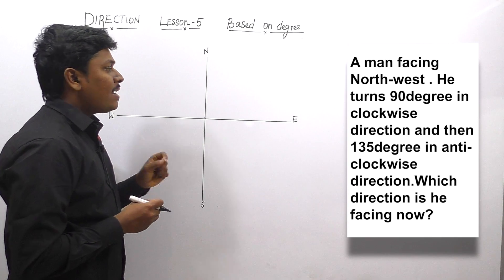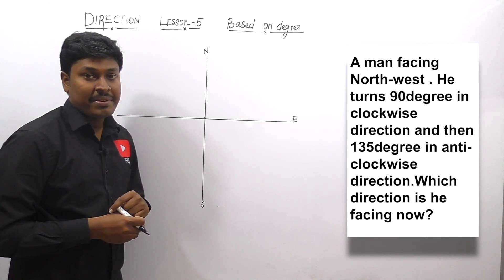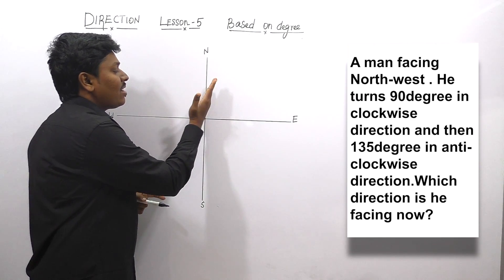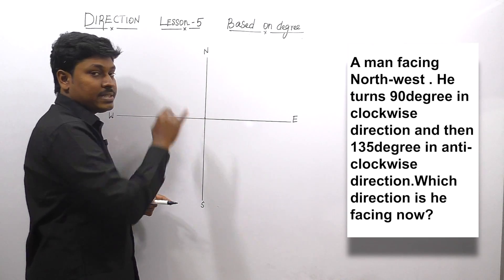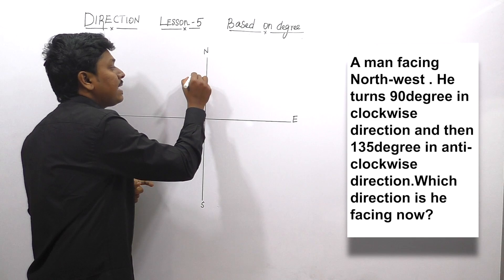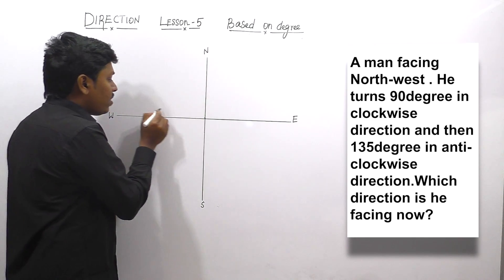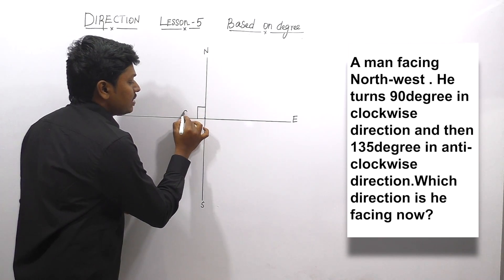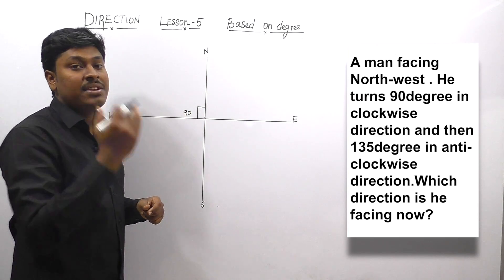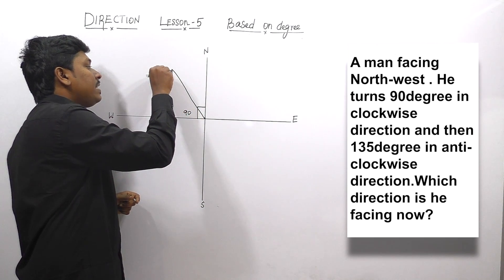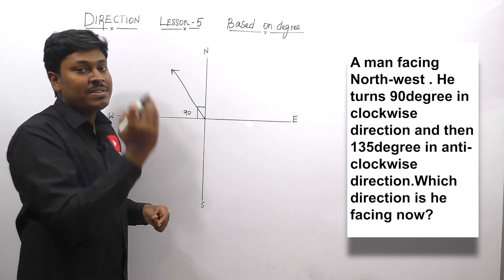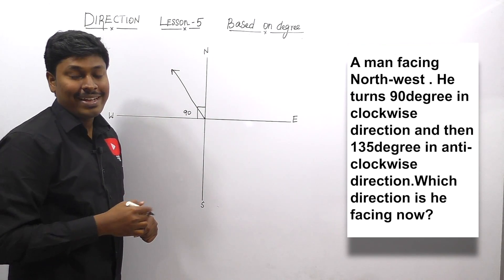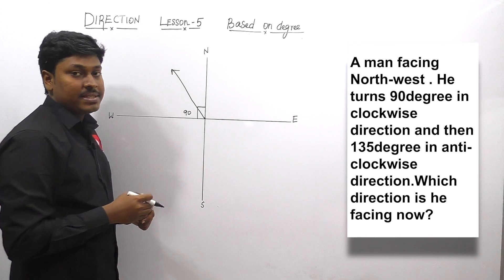Moving to question number 3: a man is facing northwest. This is one of the most important questions. In questions one and two, a man is facing east, north, or south — that is easy. But here, a man is facing northwest. From this point, if I draw a line like this, this is northwest. This complete angle will be 90°. If the question states a man is facing northwest, draw exactly at 45° — this is 45° and this is 45°. Exactly at 45°, a man is facing northwest.